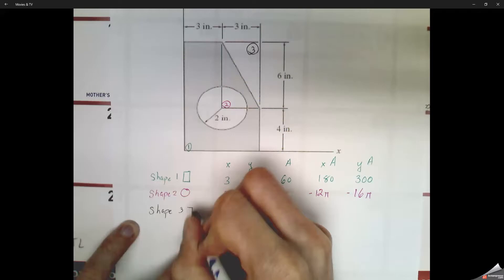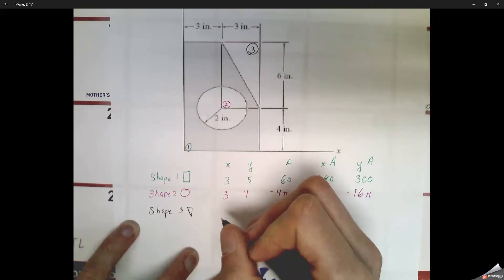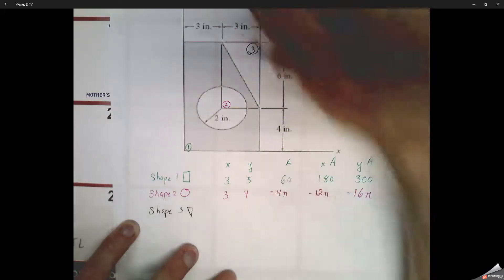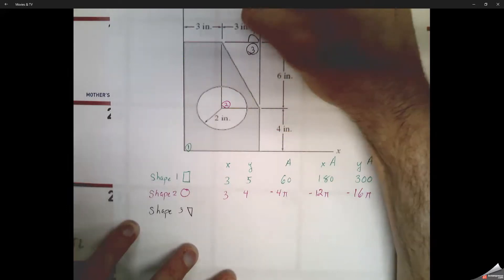And then x times area, 3 times 4 pi is negative 12 pi. Y times area is 4 times 4 pi, so negative 16 pi. Last shape we're going to look at is shape 3.